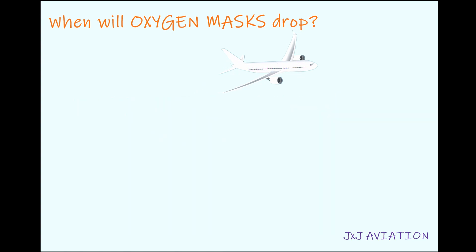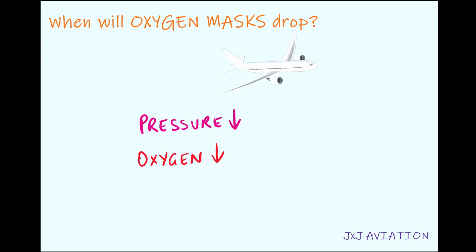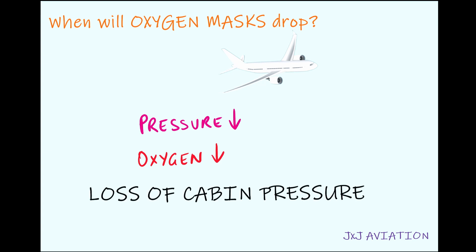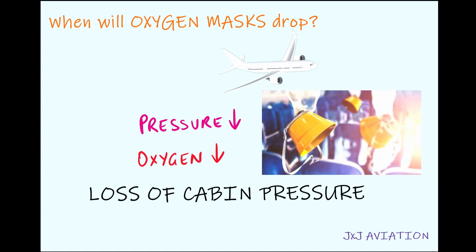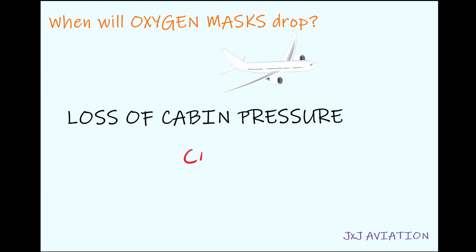But in case the pressure inside the aircraft reduces, the oxygen inside the aircraft also starts to reduce. This is called a loss of cabin pressure and will cause the oxygen masks to drop inside the aircraft. A loss of cabin pressure will affect the cabin altitude.